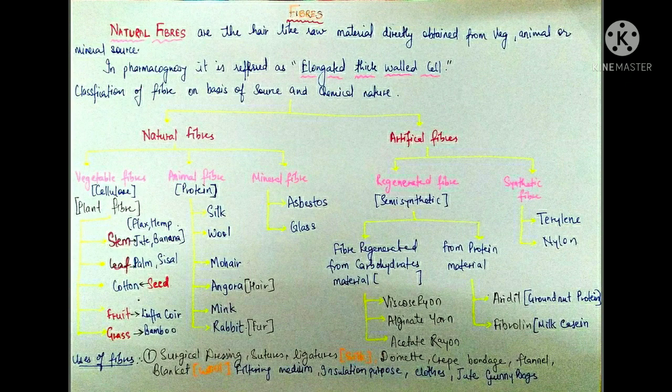Coming to animal fibers — animal fibers are proteins, just as vegetable fibers are cellulose. In protein we have examples like silk, which comes from the silkworm. Wool is given by sheep. Then mohair, which is obtained from a special goat called the Angora goat. Angora rabbit is also a source, and mink and rabbit fur are also used as animal fiber.